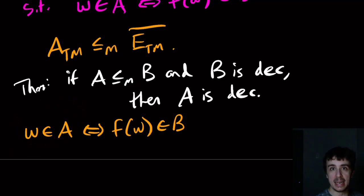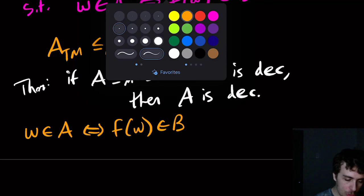And then from that, look at what this is saying: whatever the answer of whether it's in B is, is exactly the same answer as it is in A. So that means that we can actually decide A. Because if I had no idea how to decide A before, I just run it through the B decider and the answer is exactly the same because of this mapping reduction.